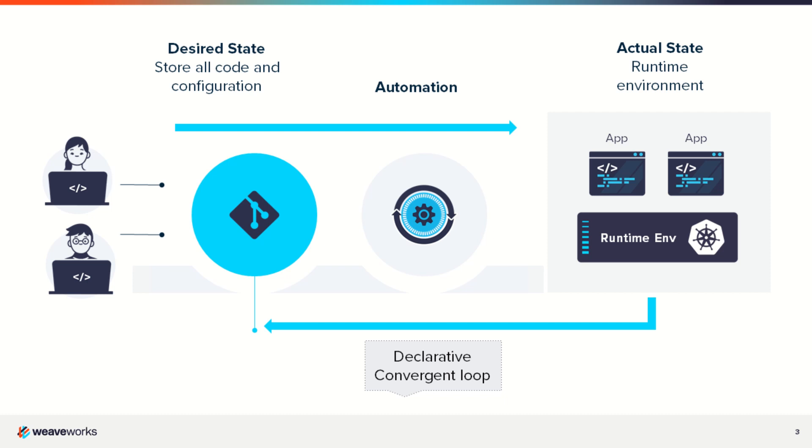This creates a declarative convergence loop. Effectively, your runtime environment always matches your desired state in Git. You have no ability to have drifts between your runtime and your Git repo. If a malicious actor gets access to your production environment, the GitOps stack will enforce the desired state, removing all the changes made manually by the malicious actors.